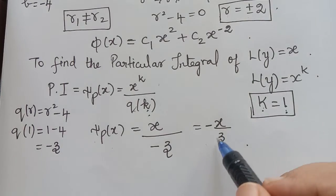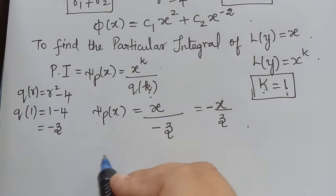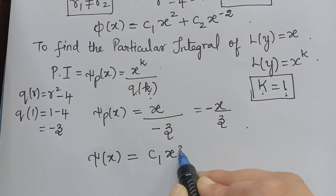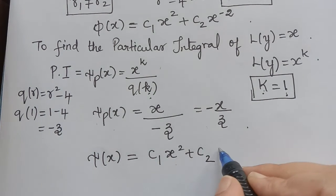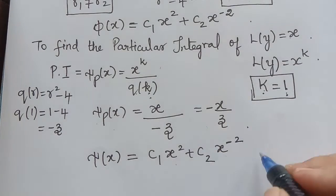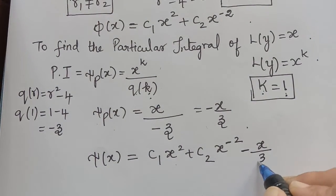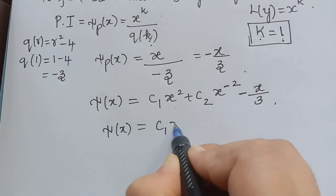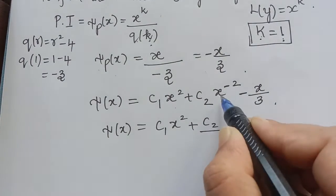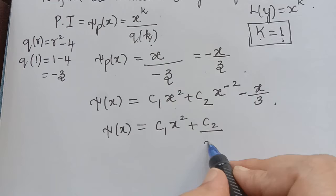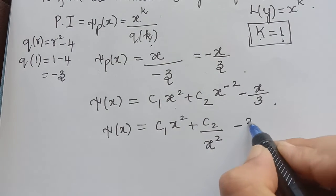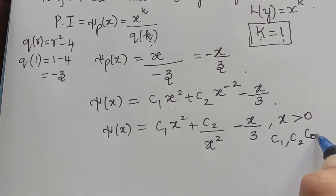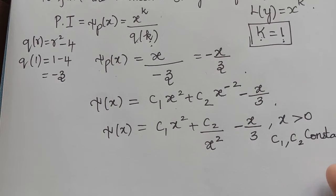Now we substitute to find the general solution. ξ(x) = φ(x) + ξₚ(x) = c₁ x squared plus c₂ x to the power negative 2 minus x over 3. Rewriting, the general solution is ξ(x) = c₁ x squared plus c₂ over x squared minus x over 3, for x greater than 0, where c₁ and c₂ are constants.